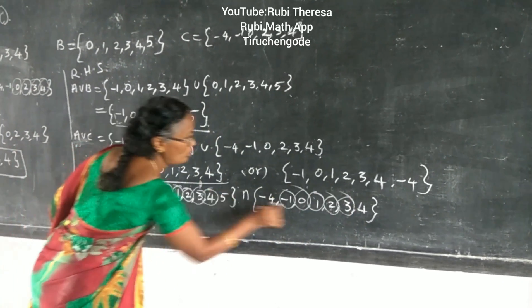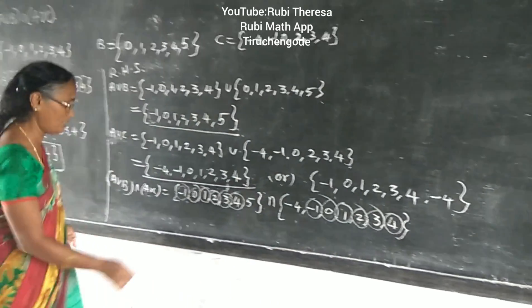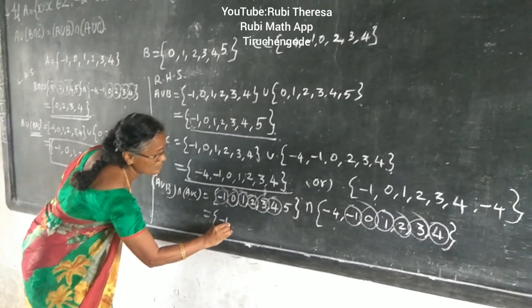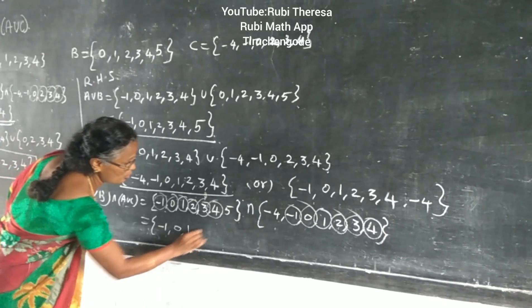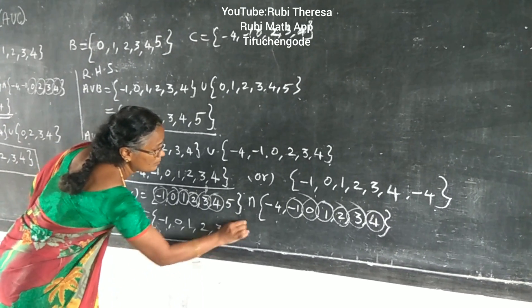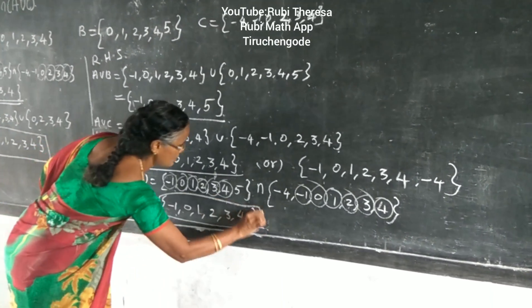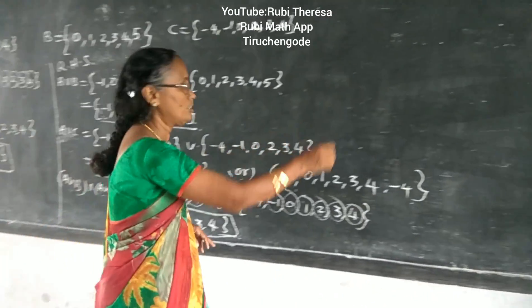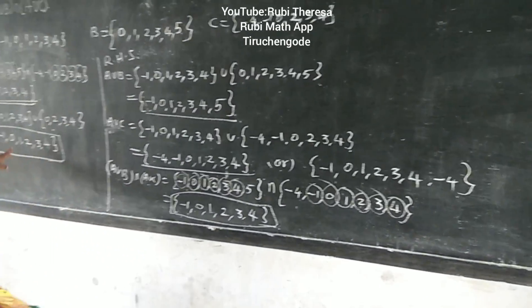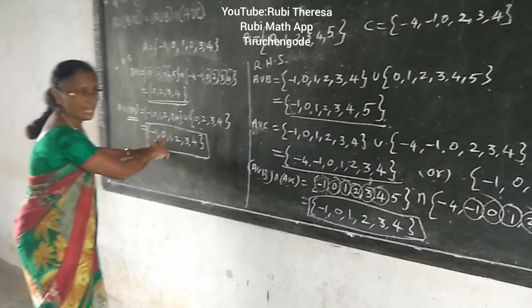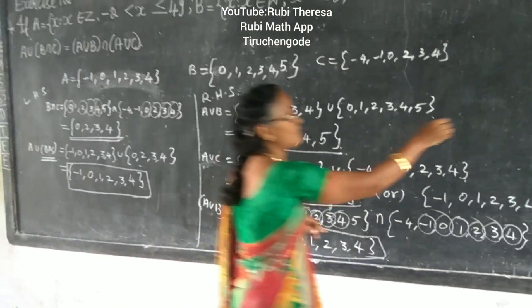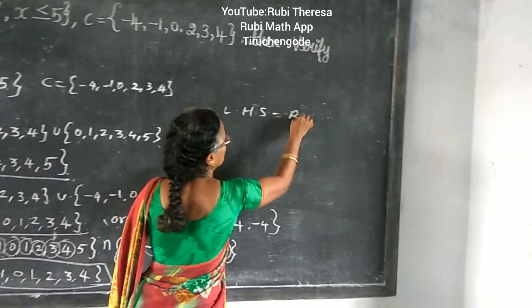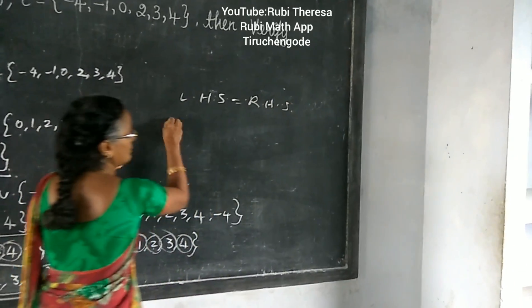Now, intersection of A union B and A union C — intersection means common. What is common? Minus 1, 0, 1, 2, 3, 4. This is the final answer.